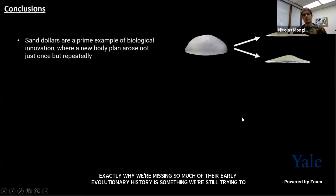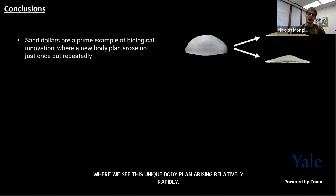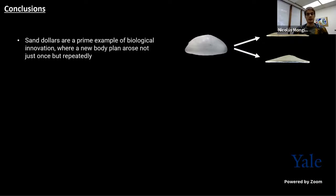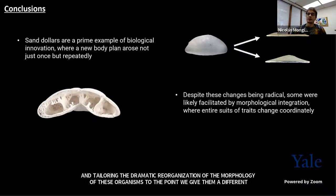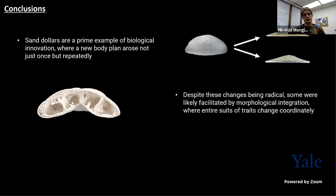Sand dollars are a prime example of biological innovation, where we see this unique body plan arising relatively rapidly and entailing the dramatic reorganization of the morphology of these organisms — to the point that we give them a different name and no longer call them sea urchins. But also, this entirely new body plan arose not only once but repeatedly across the diversification of sea urchins. Despite these changes being extremely radical — meaning a deep reorganization of anatomy — we can probably better conceptualize that evolutionary process by understanding how it was facilitated by morphological integration: we're not dealing with the repeated origin of multiple independent traits, but a single suite of traits that necessarily appears and disappears altogether in a coordinated manner.